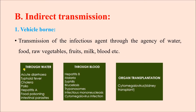Examples of vehicle-borne infection through water include acute diarrheal episodes, typhoid, cholera, poliomyelitis, hepatitis A, food poisoning, and intestinal parasites. Blood can also act as a carrier — examples include hepatitis B, malaria, syphilis, brucellosis, trypanosomes, and infectious mononucleosis. In organ transplantation, cytomegalovirus may be present in the transplanted kidney and can cause infection in the recipient.